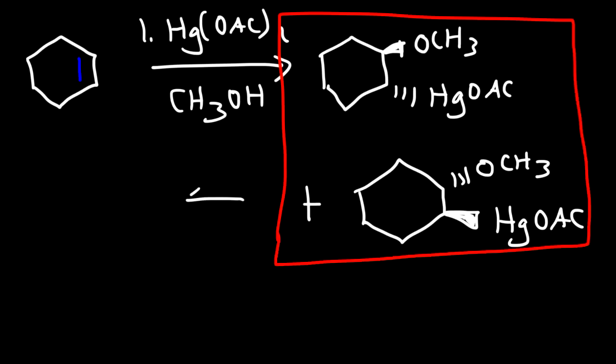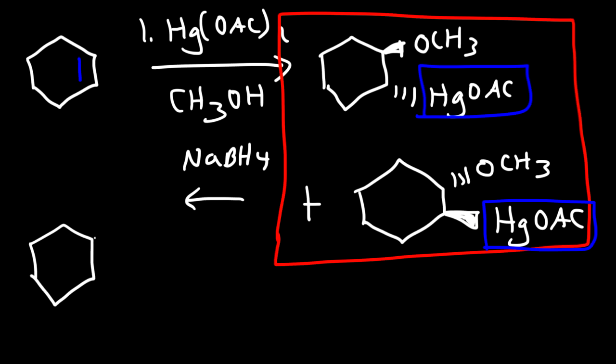But if we use sodium borohydride at this point, then we're going to replace this group with a hydrogen. And so stereochemistry is no longer important. Notice that this carbon is not chiral. So at this point, we only get one final product.